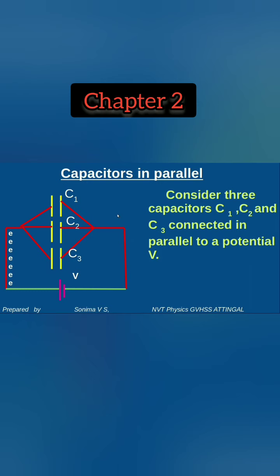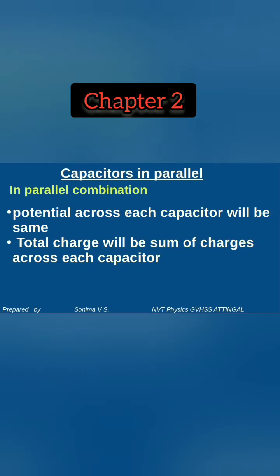Now, in parallel combination, the potential difference V is constant. C1, C2, and C3 may have different capacitance values, but the potential difference across each will be the same. The total charge is split among the three capacitors. In parallel combination, the potential across each capacitor will be the same, and the total charge will be the sum of charges across each capacitor.